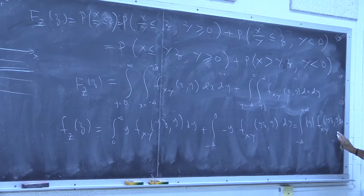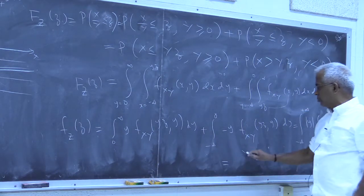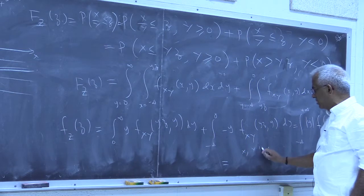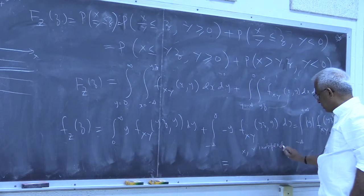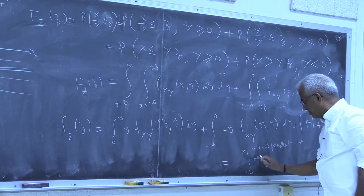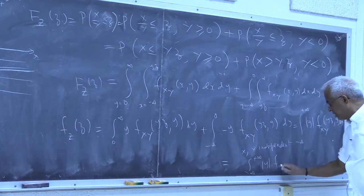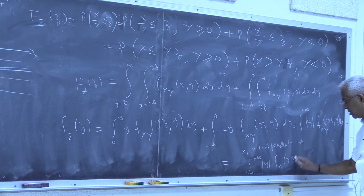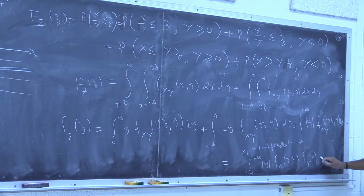If x and y are independent, this formula becomes the integral from minus infinity to plus infinity of the absolute value of y times f_x(yz) multiplied by f_y(y) dy.